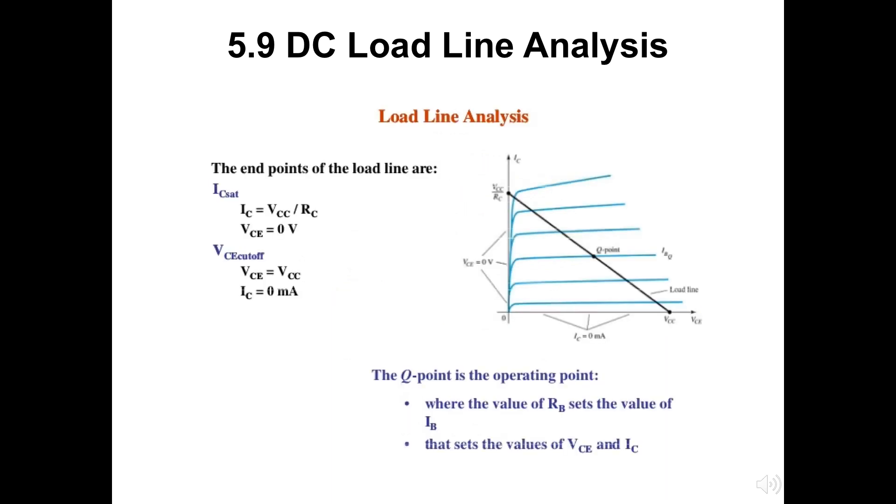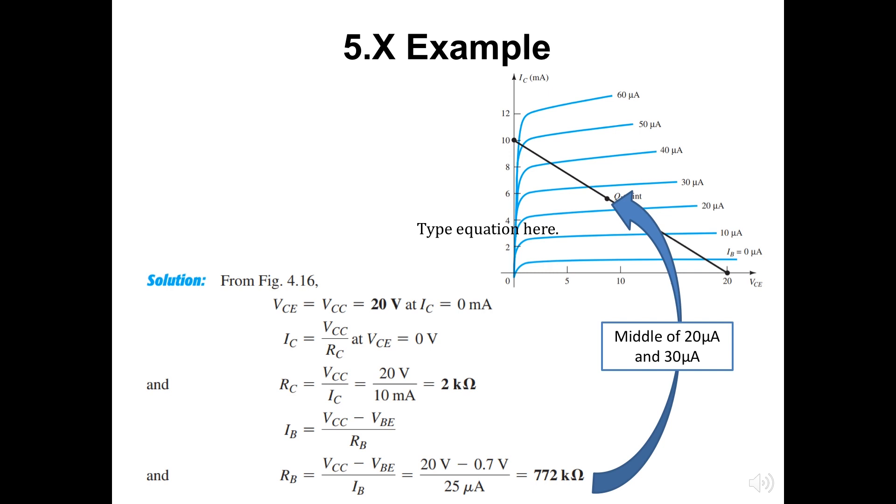This slide refers to the DC load line curve characteristic. IC is equal to VCC by RC with VCE is 0V. Here is the example of how to find the Q point related questions. Horizontal axis intercepted element is VCE and VCC which is equal to 20V. At the vertical axis, IC is the division between this VCC and RC and VCE here is 0V. RC is 2kΩ, while the IB is used to find the RB. RB is 772kΩ.